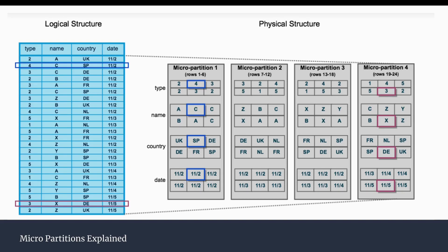The benefit of columnar storage is that it helps the query optimization layer — the cloud services layer — identify which micro partitions need to be read to return the output for a particular query.